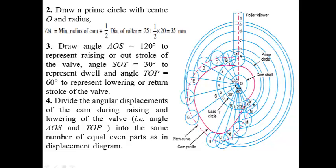The remaining portion is again the dwell period. When we divide the angles into equal parts, the lines cut the prime circle at different points 1, 2, 3, 4, 5, 6 for the outward stroke and 1', 2', 3', 4', 5', 6' for the return stroke. We mark all these points and extend them. We join each point from O and extend outward. So from all these points we draw lines passing through O and extended in the other direction, obtaining these different lines.